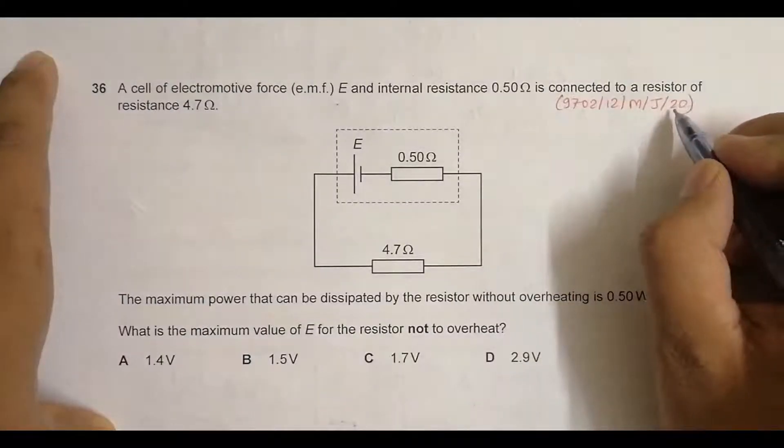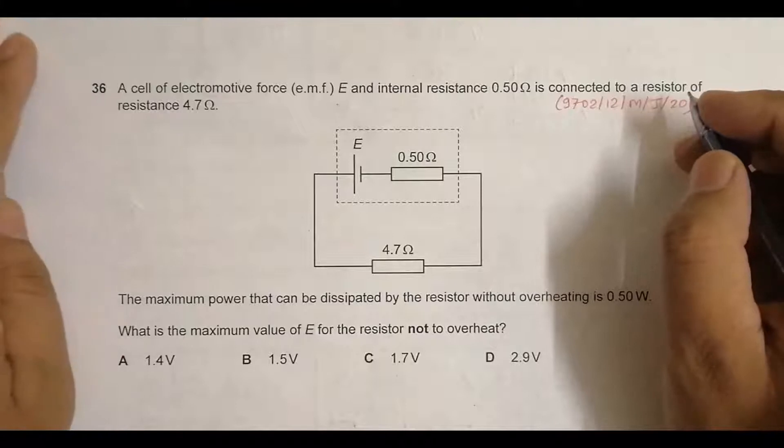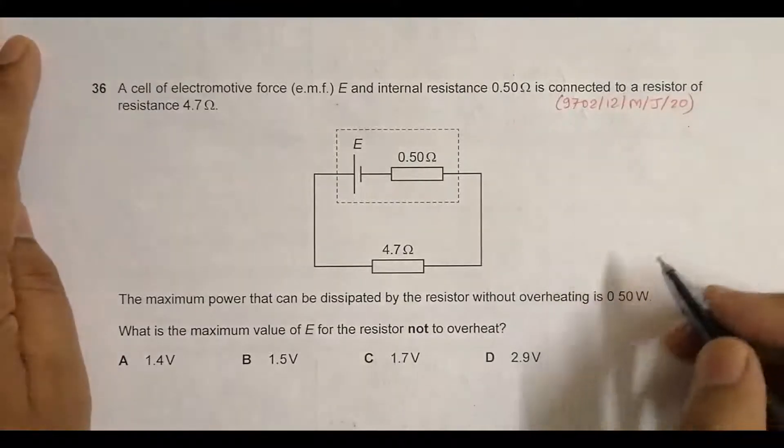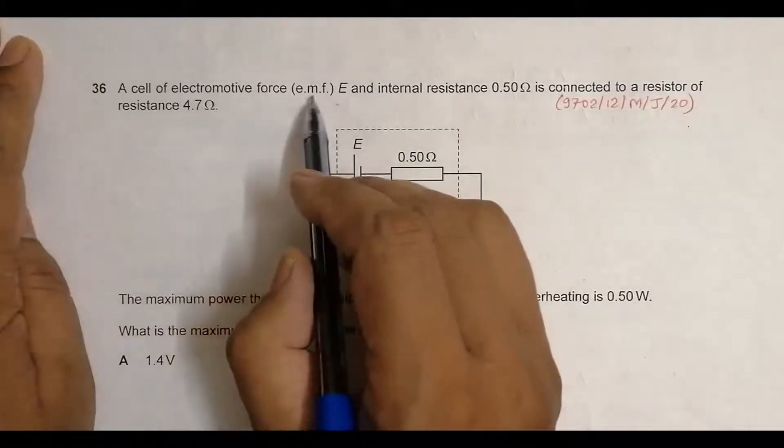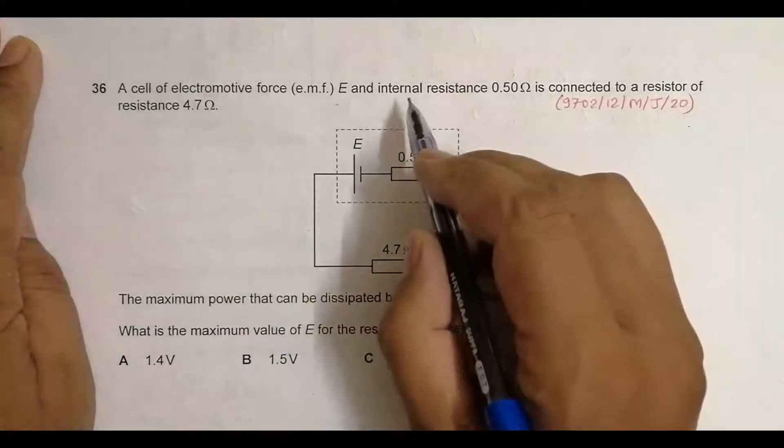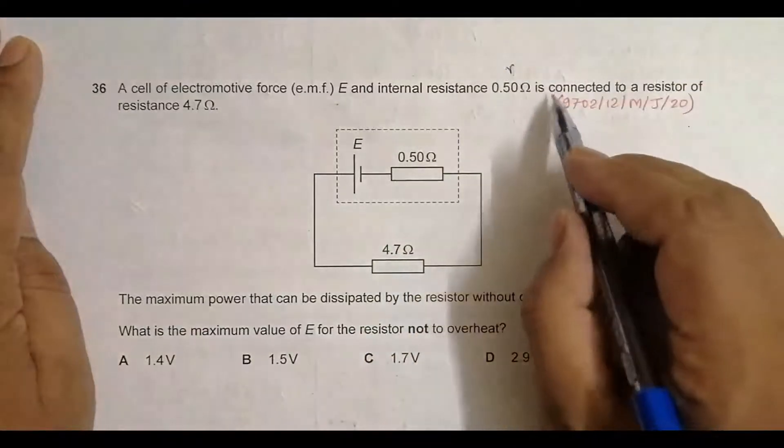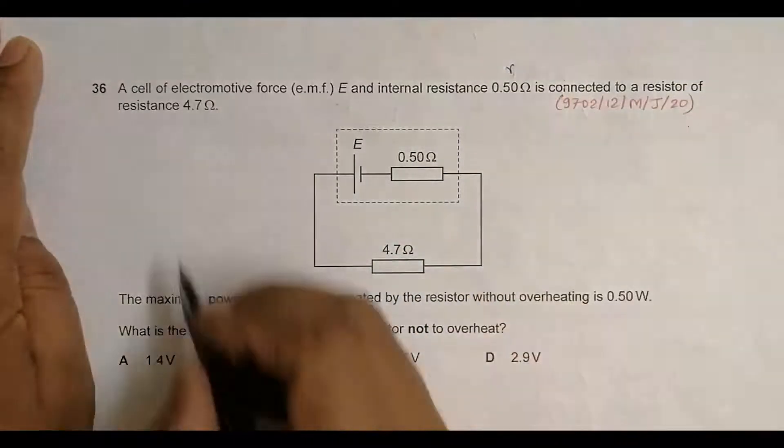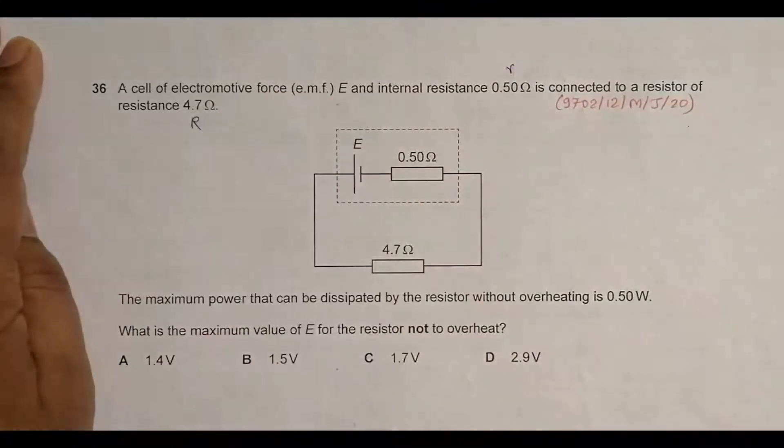Hello folks, today I have the 2020 May-June paper 12, question number 36. This question is concerned with circuit electricity. It says that a cell of electromotive force (EMF) E and internal resistance 0.50Ω is connected to a resistor of resistance 4.7Ω.